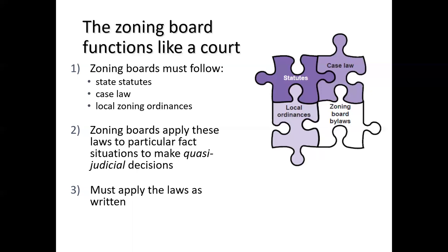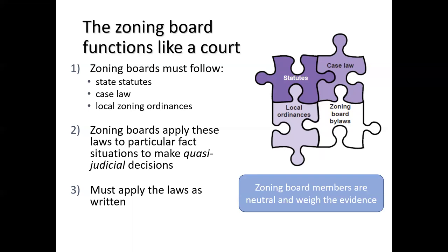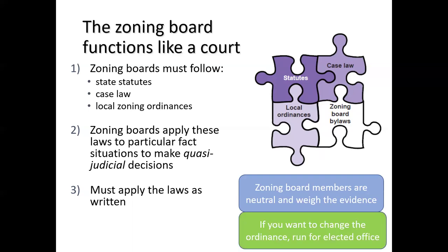The zoning board functions like a court. There are three types of laws that zoning board members have to follow: state statutes, case law — that's court decisions from the Supreme Court and published decisions — and the local zoning ordinance. Zoning boards apply these to particular fact situations to make quasi-judicial decisions, like a judge. They have to apply the laws as written today; they can't change them. If your real goal is to change the ordinance, you can make recommendations, but it's the elected officials who vote on changing it.